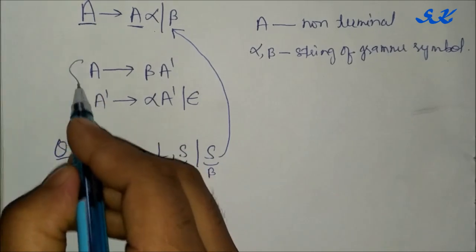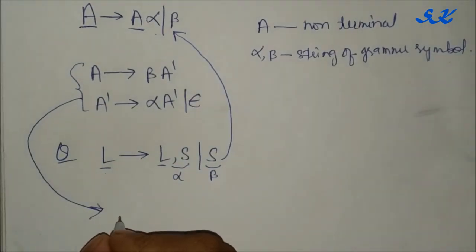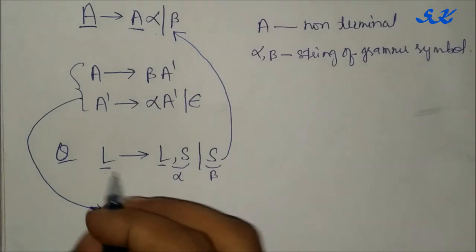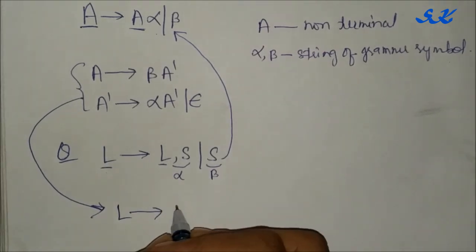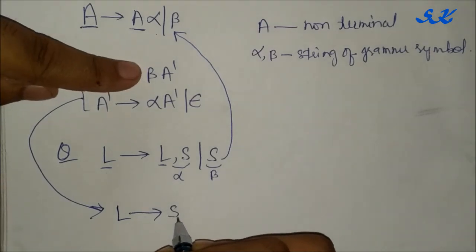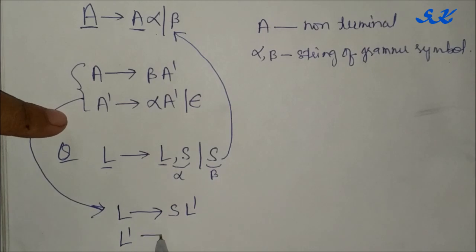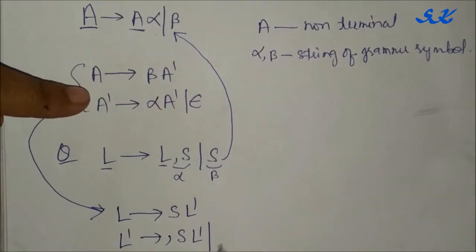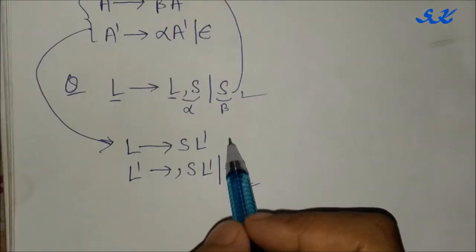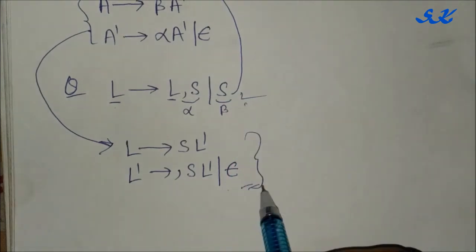So according to this, to remove left recursion, L will be beta S and L-dash. And L-dash will be alpha which is comma S, L-dash, and epsilon. After removing left recursion, we get this production.